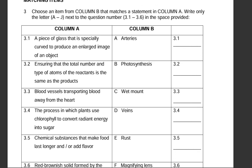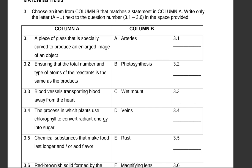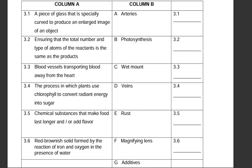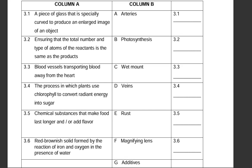Let's move to question three, matching items. Question three matching items: choose an item from column B that matches a statement in column A. Write only the letter A to J next to the question number 3.1 to 3.6 in the space provided. Remember you can pause the video and attempt to answer. 3.1: a piece of glass that is specially curved to produce an enlarged image of an object. I think it's F, magnifying lens. Magnify means enlarge an object. So that is F.